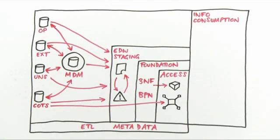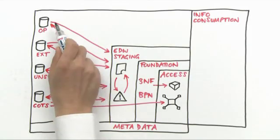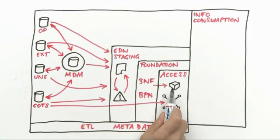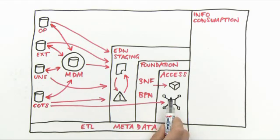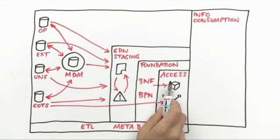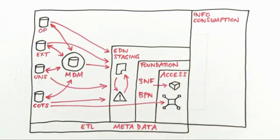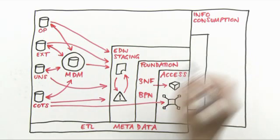In the architecture we have the information sources and then the three layers that make up the enterprise data warehouse. As we've seen in previous episodes, the bulk of the information will be delivered from star schema or preferably OLAP structures within the EDW provision. We are now considering what makes up the information access layer.